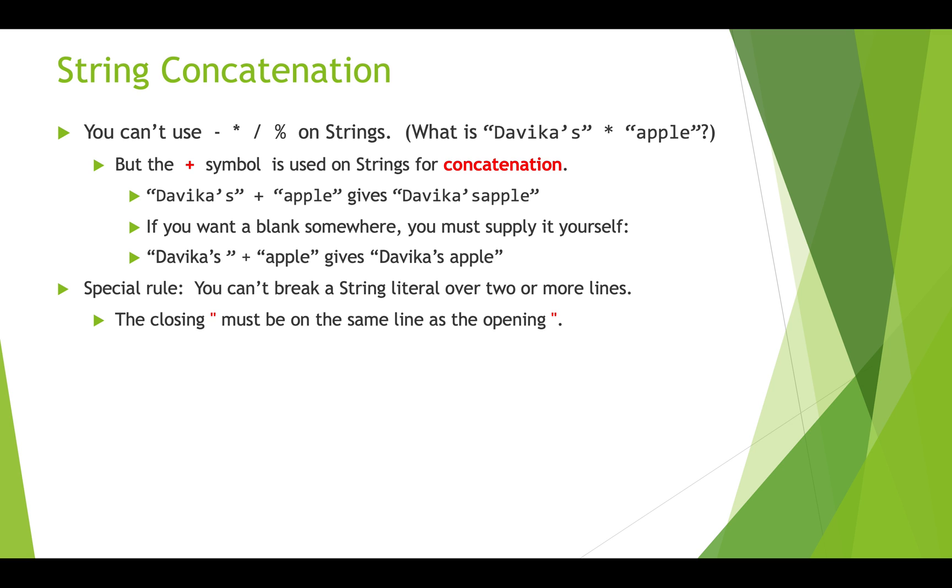So if we have Davika's plus apple, then we get Davika's apple. And what you see here is actually that there's no space between the S and the A at the end of Davika's and the beginning of apple. So if you actually want a blank somewhere, you've got to supply it yourself. So in the next example, we've got Davika's, but there's a space after the S before the close quotation. And when we concatenate that with apple, we get Davika's apple with a space in there.